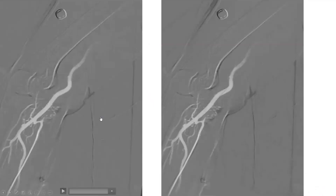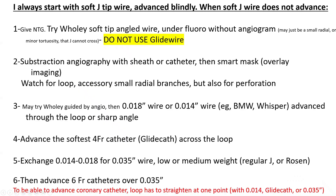Remember, do not use a glide wire at the level of the forearm or arm, because there are many flimsy small branches. The glide wire, which is a polymer 0.035 inch wire, will tend to go into those branches and perforate them. Do not use a glide wire. Use the technique described: 0.014 to 0.018 inch wire, track over it with a 4 French flimsy glide catheter, exchange for a 0.035 inch wire, then advance the 6 French catheter.